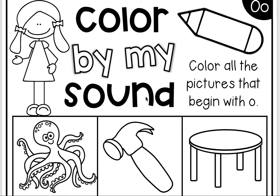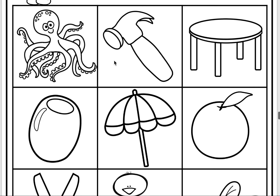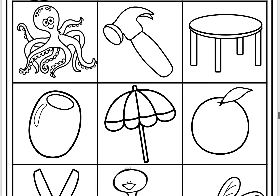So let's begin. We're going to color all the pictures that begin with O. Listen as I make the first sound in octopus — AH. That's right! We need to color this picture. Pause the video and color in the octopus.